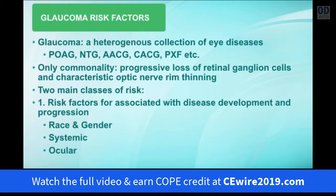First, let's define what glaucoma risk factors are. Glaucoma is a heterogeneous collection of eye diseases — there's primary open angle glaucoma, normal tension, acute angle closure, chronic angle closure, secondary glaucoma such as pseudo exfoliation, pigment dispersion, traumatic glaucoma, and uveitic glaucoma. The only real commonality between all the different glaucomas is that there's a progressive loss of retinal ganglion cells and a characteristic thinning of the neuroretinal rim tissue of the optic nerve.